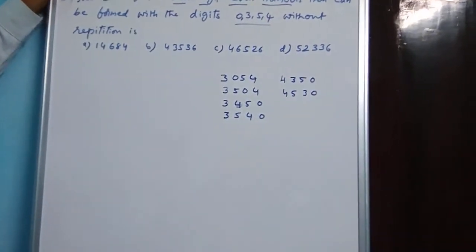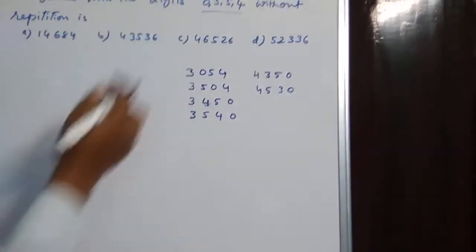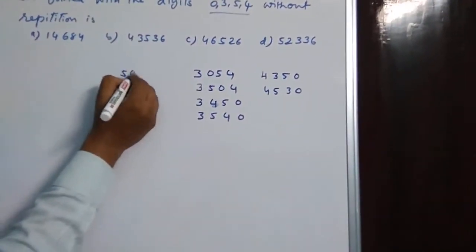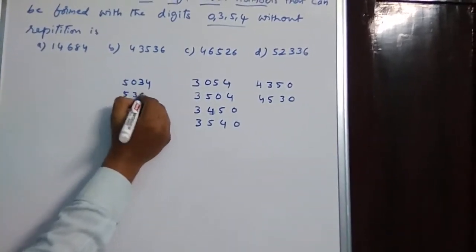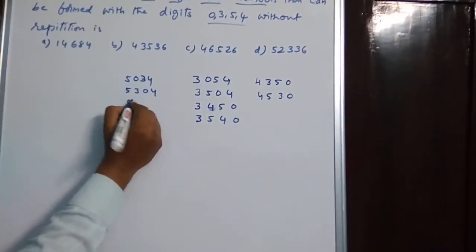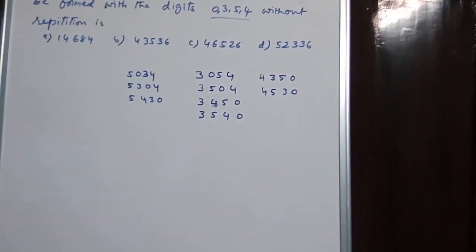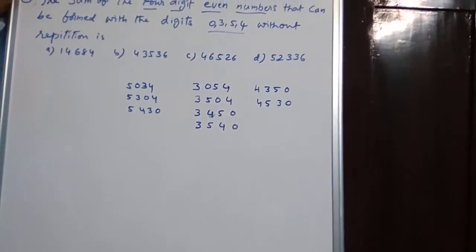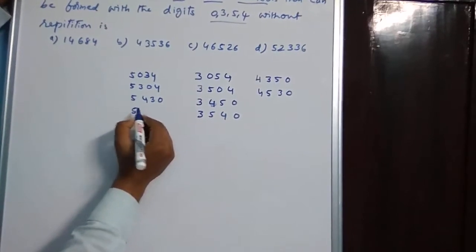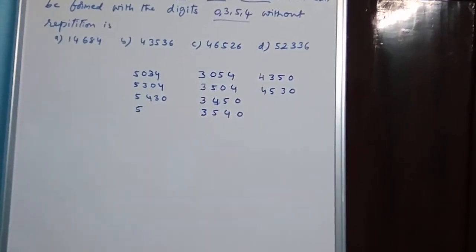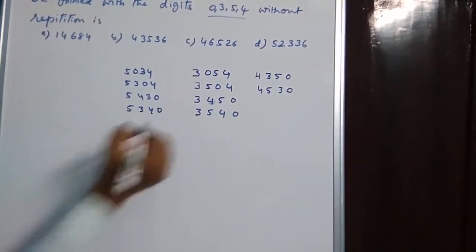Next, the number of four-digit even numbers that will begin with 5: 5, 0, 3, 4; 5, 3, 0, 4 — wait — 5, 3, 0; next 5, 0, 3, 4; 5, 0, 3, 4; 5, 4, 3, 0; and one more number: 5, 3, 4, 0.